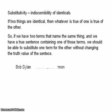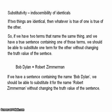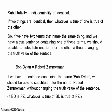Suppose, for example, we say that Bob Dylan is Robert Zimmerman — Bob Dylan equals Robert Zimmerman. This is a true statement of identity. Robert Zimmerman is simply another name for Bob Dylan. The idea of substitutivity is that if we have some sentence containing the name Bob Dylan, we should be able to substitute in the name Robert Zimmerman for Bob Dylan without changing the truth value of the sentence. That's an expression of the commonsensical idea that if Bob Dylan is Robert Zimmerman, then whatever is true of Bob Dylan is true of Robert Zimmerman, and vice versa.